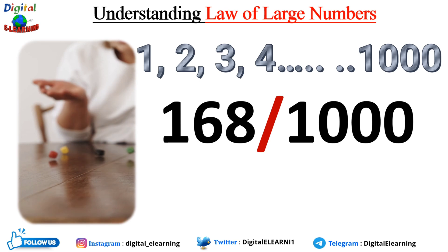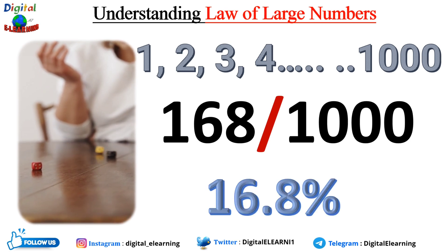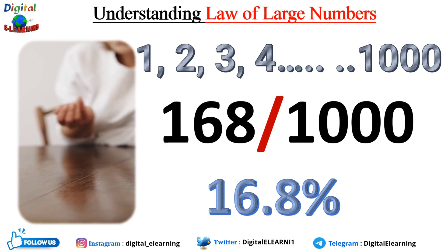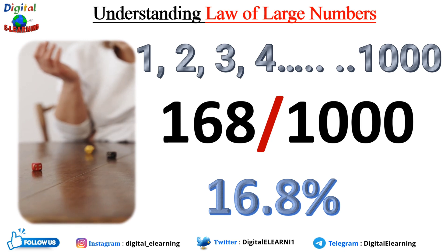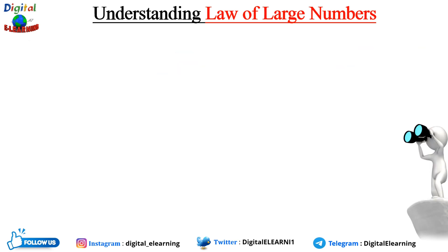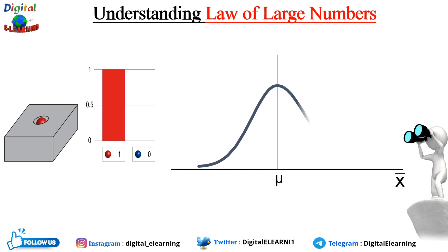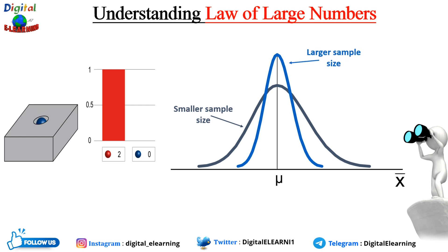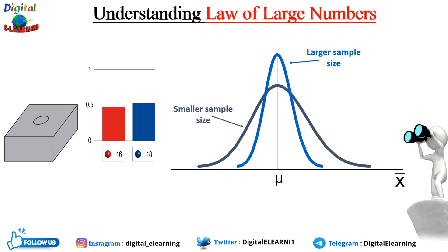Increasing to 1,000 rolls, we get 168 sixes, with a proportion of 16.8%. So in the coin flip example, as we increase the sample size, the proportion of heads tends to approach the true proportion of 50%. In the dice example, the proportion of sixes rolled converges toward the true probability of 16.67% — that is, one divided by six. The larger the sample size, the closer the result gets to the expected value. Summarizing: as sample size increases, the sample mean gets closer to the expected value or true population mean. This is the concept of the Law of Large Numbers.